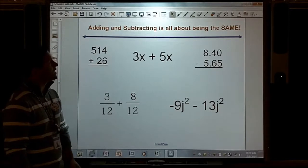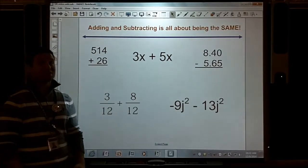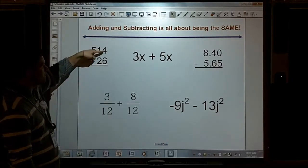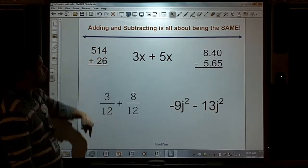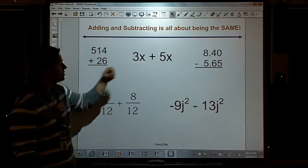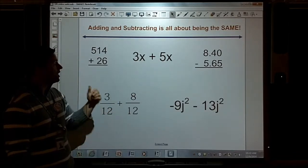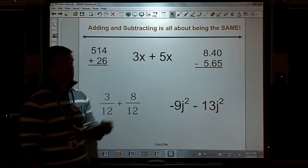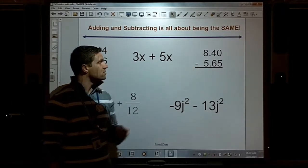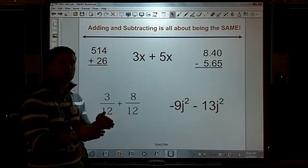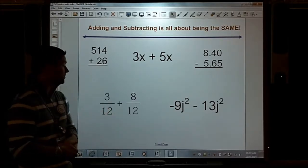Adding and subtracting is all about being the same. When we add numbers, they're both in the units digit, both in the tens digit. We add variables as like terms because they both have x, they both have x to the first power. When we subtract decimals, we're going to add the things that are in the same column: the ones, the tenths, the hundredths.